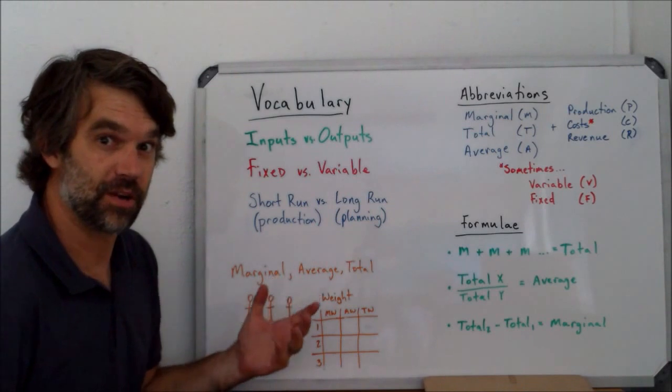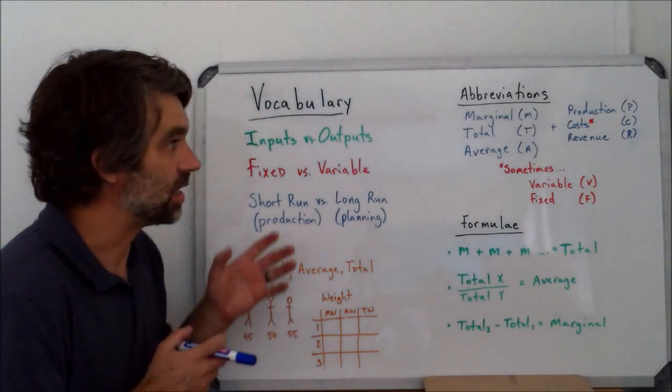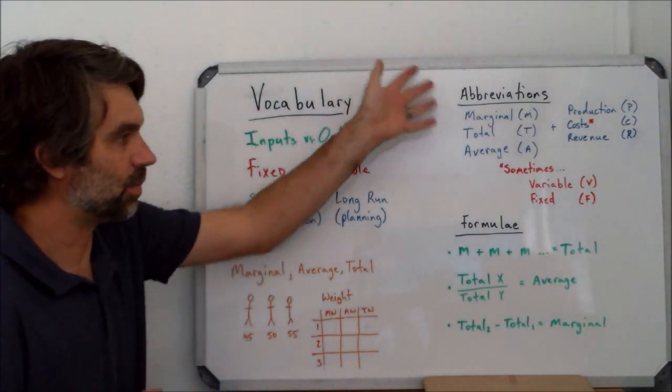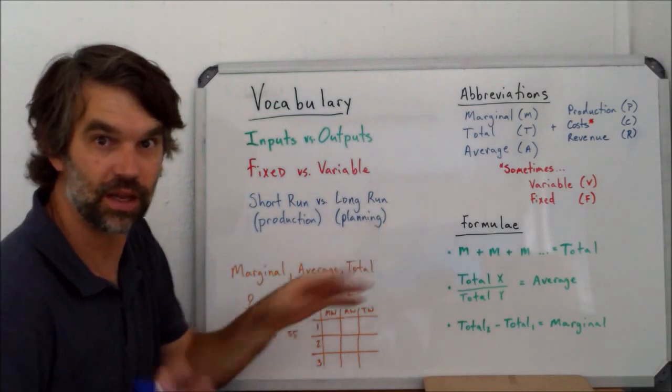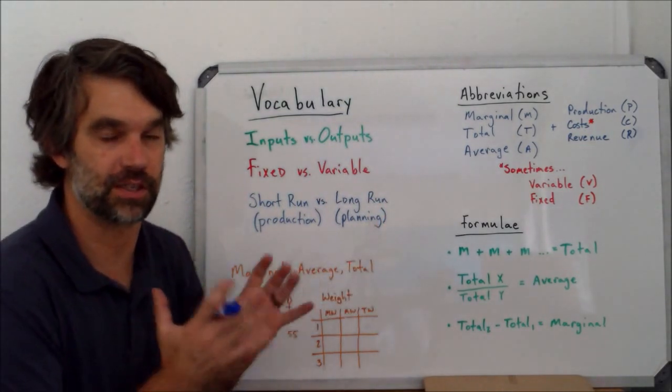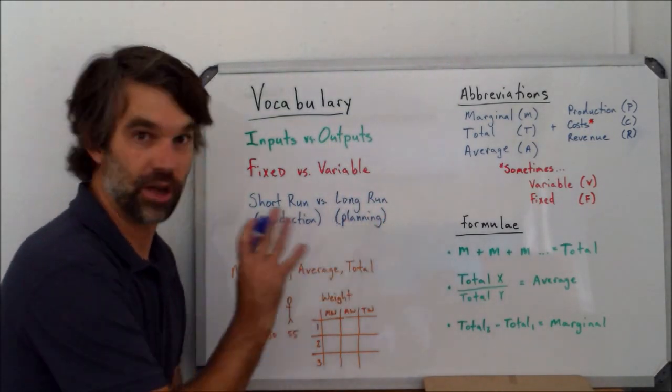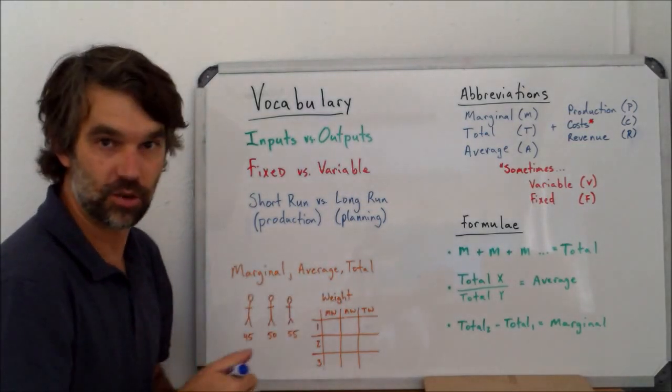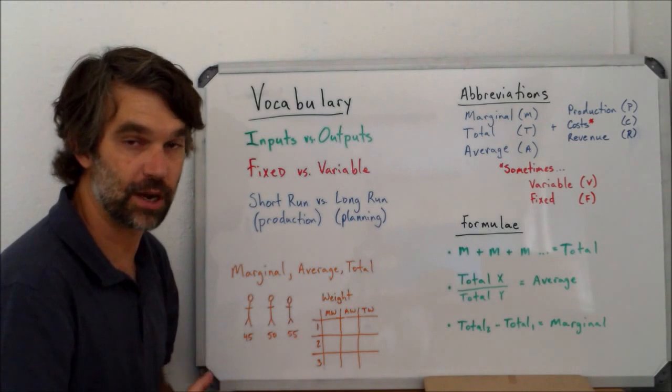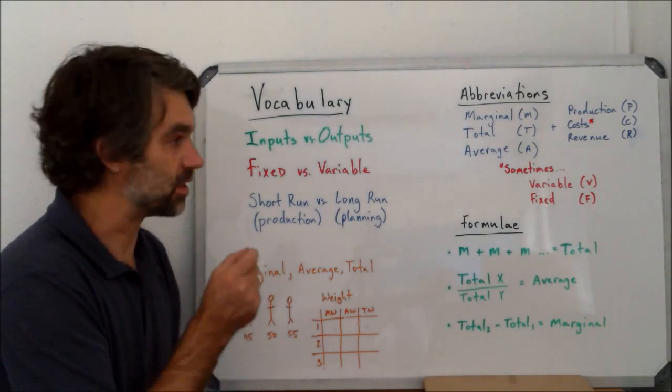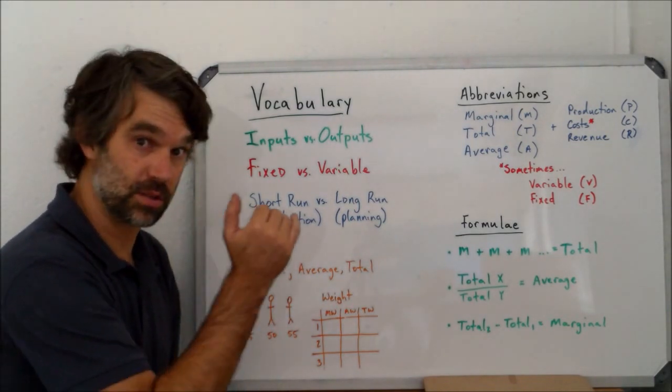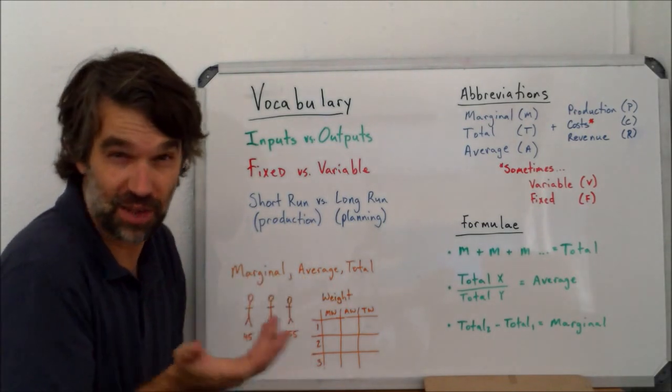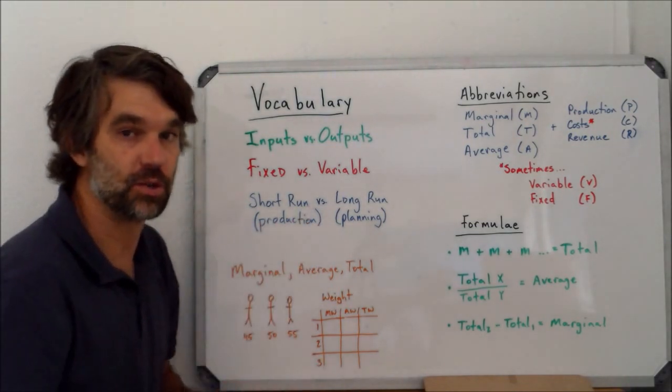The second thing about Theory of the Firm that you're going to have to get used to is a lot of new vocabulary, abbreviations, and formulas. They come at you fast and furious in this unit. So if ever you get stuck, just come right back to this video and most of the big ones will be covered here. If it is a term that's particular to a specific part of the study, for example production, I'll keep it there as well.